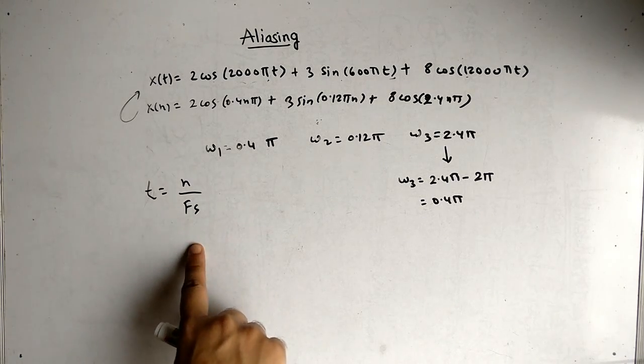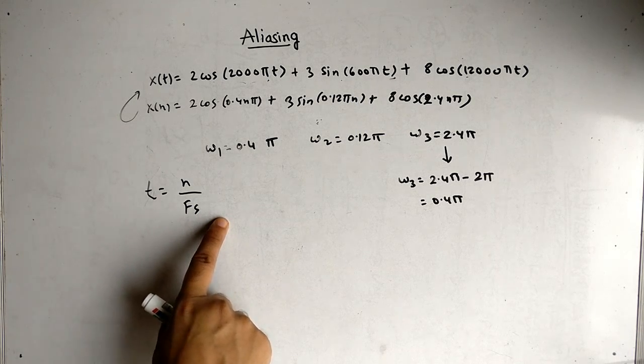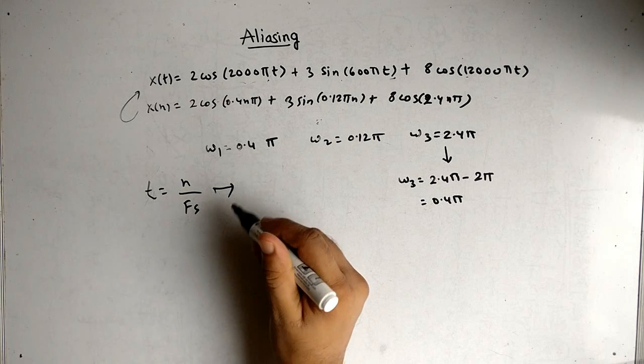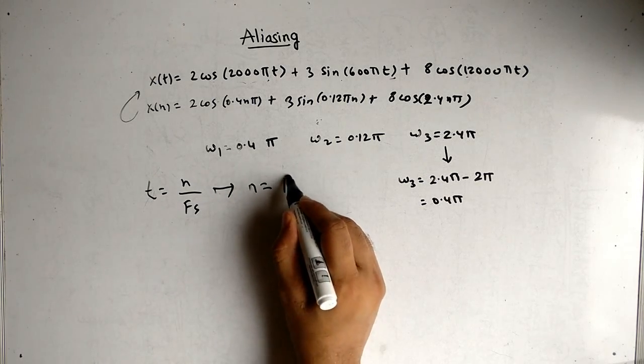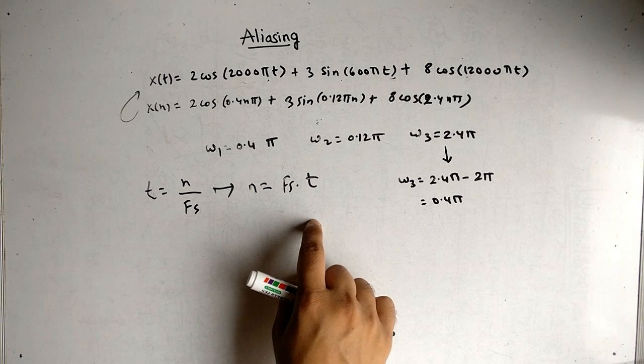Previously we used t is equal to n by fs to convert x(t) into x(n). Now we want x(t) back. So we can manipulate this equation as n is equal to fs times t, so that we can get the x(t) back.